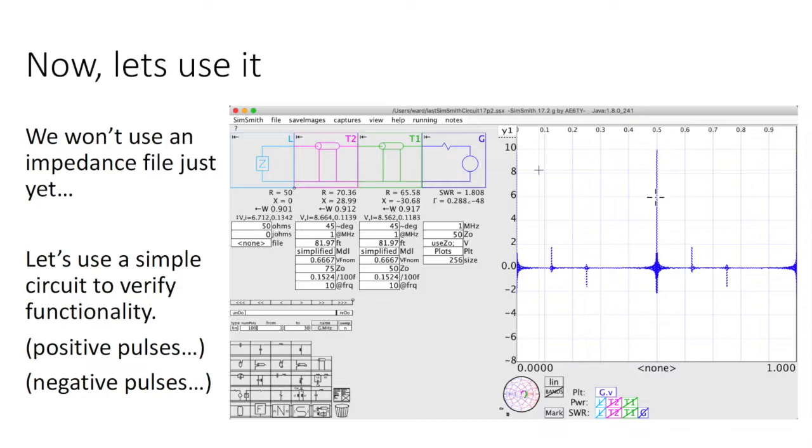So here's our input pulse. Here's the positive pulse as the impedance increased. And here's the negative pulse as the impedance decreased.